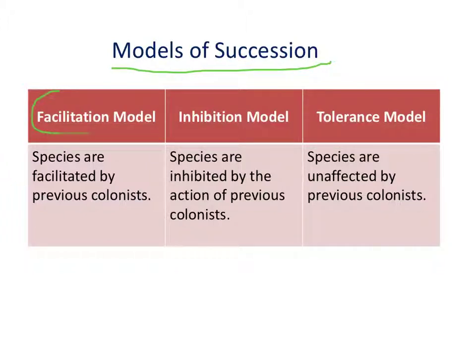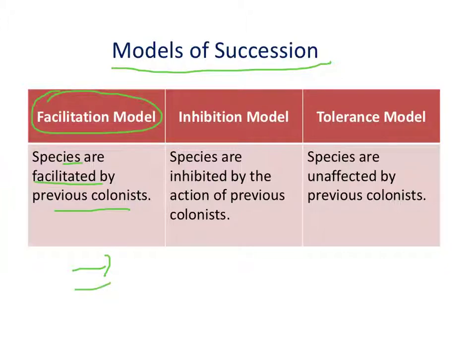The classic facilitation model is just one way succession may happen, or just part of the way succession could happen for any one community. The idea is that species are facilitated by previous colonists — one species comes in, changes the soil conditions, and makes it just right for the next species. The environment is no longer favorable for that earlier species, but now it's favorable for the new species. But it's not necessarily the only way succession can occur. In the inhibition model, species are actually inhibited by the action of previous colonists.